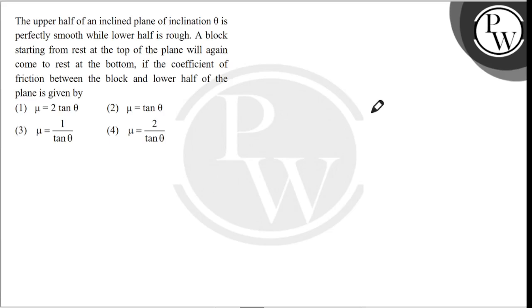Hello, let's read the question. The upper half of an inclined plane of inclination θ is perfectly smooth while the lower half is rough. A block starting from rest at the top of the plane will again come to rest at the bottom if the coefficient of friction between the block and lower half of the plane is given by: (1) μ = 2 tan θ, (2) μ = tan θ, (3) μ = 1/tan θ, (4) μ = 2 tan θ.